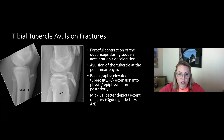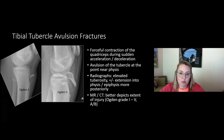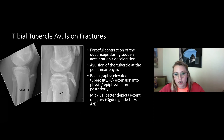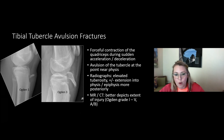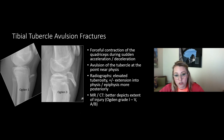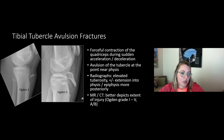The tibial tubercle avulsion fracture results from forceful quadriceps contraction transmitting force down to the distal patellar tendon. Just before fusion, the fibrocartilaginous cartilage has converted to weak columnar cartilage that pulls right off. Radiographically, you may see just elevation of the distal tip of the tubercle, or the fracture can propagate posteriorly into the physis, or superiorly through the epiphysis into the articular surface. Radiographs are usually sufficient, though MRI helps define associated injuries.